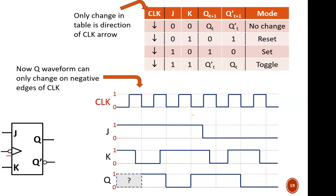Again, with this question mark, Q is unknown until that first instruction. But here I see that J equals 1 and K equals 0. This is set mode, so Q is forced to a 1.